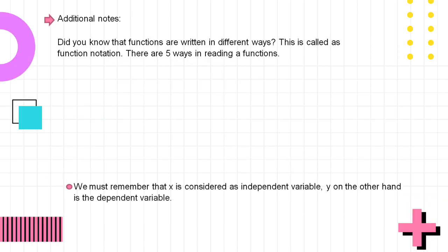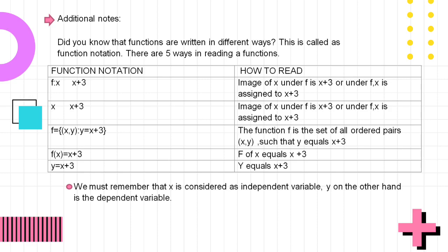Did you know that functions can be written in different ways? This is called function notation. There are five ways of reading a function. First: 'image of x under f is x plus 3.' Second: 'under f, x is assigned to x plus 3.' Third: 'the function f is the set of all ordered pairs x and y such that y equals x plus 3.' Fourth: 'f of x equals x plus 3.' Fifth: 'y equals x plus 3.' Remember that x is considered the independent variable and y is the dependent variable.